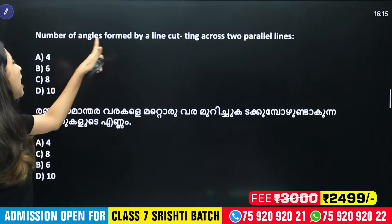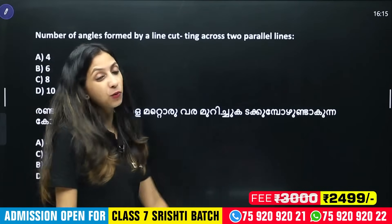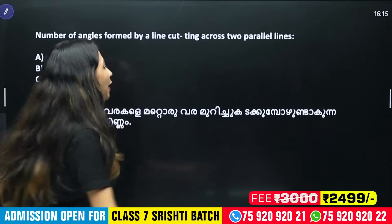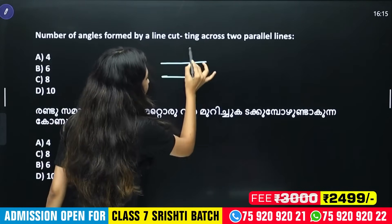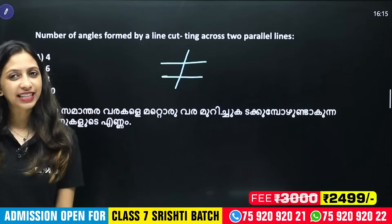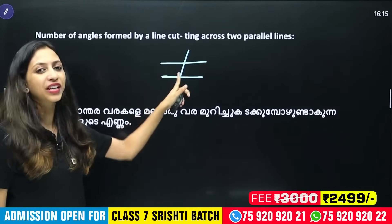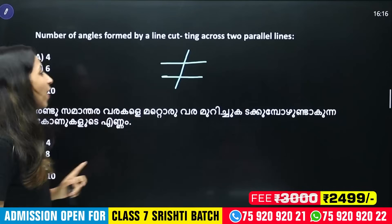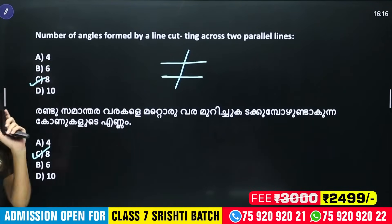Next question: the number of angles formed by a transversal across two parallel lines. Two parallel lines cut by a transversal — at each intersection we have four angles, so altogether we have eight angles.